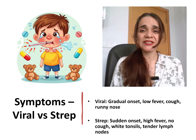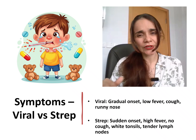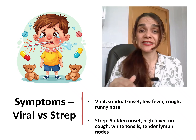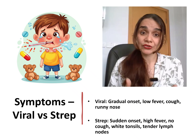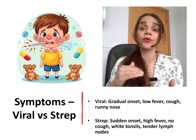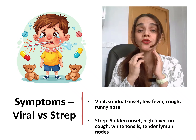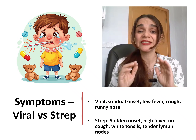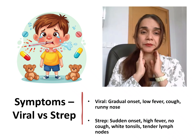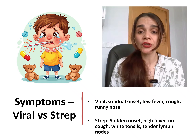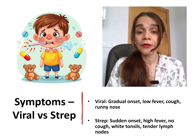Symptom patterns help us distinguish between the two. Viral pharyngitis usually starts gradually, often with a low-grade fever, cough, sneezing, or a runny nose — classic cold symptoms. Strep throat, in contrast, has a sudden onset of sore throat, high fever, no cough, and often features exudate or pus on the tonsils, as well as tender swollen lymph nodes in the neck. The absence of cough is actually a helpful clue, pointing toward bacterial rather than viral infection.